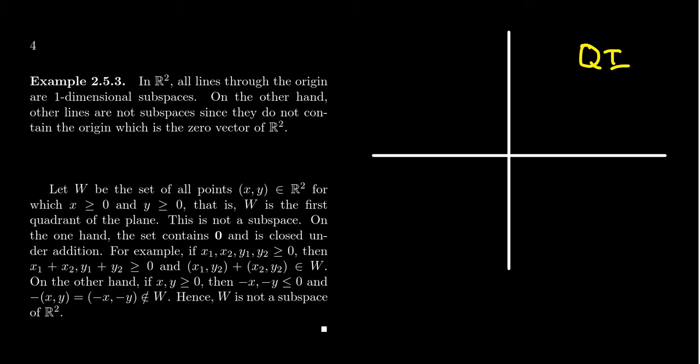We're talking about the first quadrant, sometimes called Q1. If you think of the plane Q2, Q3, Q4, in its usual orientation, we're talking about Q1. That's what this set W is talking about right here, this first quadrant. Is it a subspace? I claim the answer is going to be no.